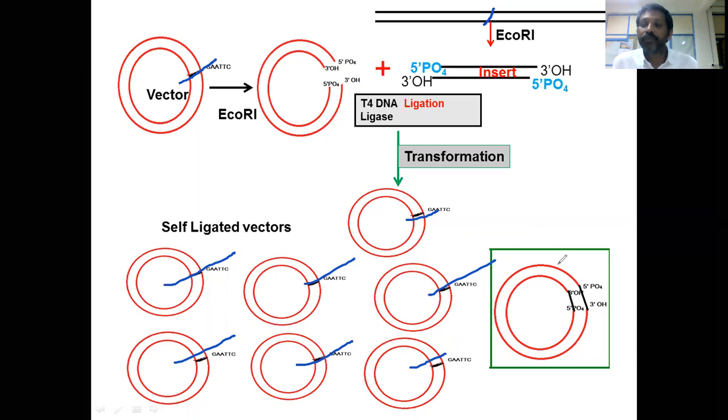Only one or two percent of the transformants consist of recombinant molecules. If you screen 100 colonies, 90 or more may contain self-ligated vectors, and only one or two colonies may contain recombinant molecules. Screening 100 colonies is cumbersome.